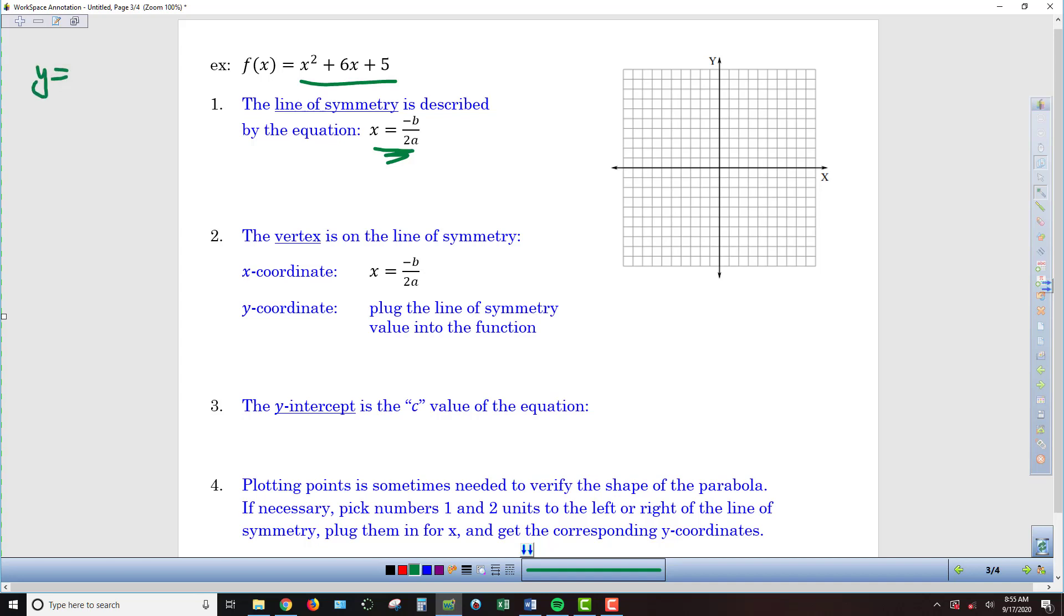The formula we're going to use for that is x = -b/2a. If you'll recall, the coefficients are ax² + bx + c. That's where we're drawing the numbers to plug into this formula. So we're going to have x = -b. Our b value is 6, so I'm going to make it -6 over 2 times a. The number in front of the x-squared, even though it's not written there, is 1. So we've got -6 divided by 2, or x = -3. That is our line of symmetry.